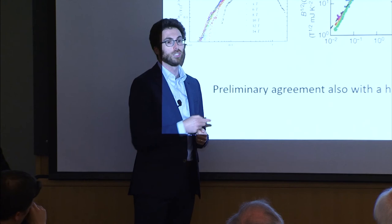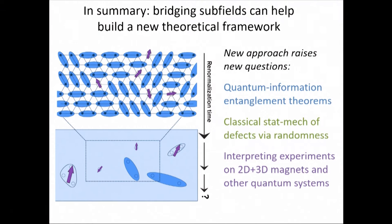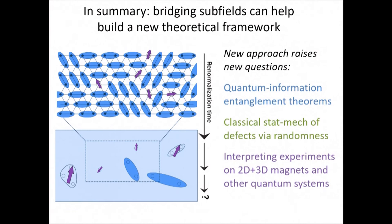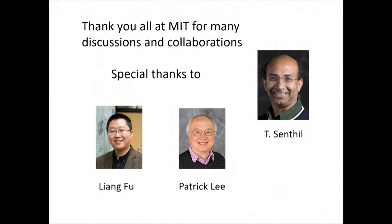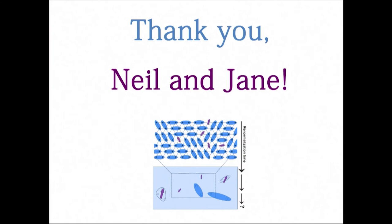That's the punchline. As part of developing this new approach, we answer some questions and open as many new ones: new questions in quantum information about ground-state entanglement like Lieb-Schultz-Mattis theorems, questions in classical statistical physics about randomness and defect nucleation, and in understanding experiments in 2D and 3D materials, and maybe not just in magnets but other systems. I'll thank my collaborators, especially Senthil with whom a lot of my work here was done, and also Liang Fu and Patrick Lee.